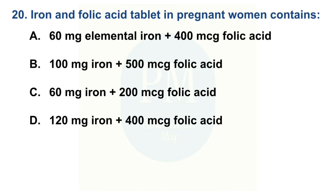Iron and Folic Acid Tablet in pregnant women contains: Option A: 60 mg elemental iron plus 400 mcg folic acid. Option B: 100 mg iron plus 500 mcg folic acid. Option C: 60 mg iron plus 200 mcg folic acid. Option D: 120 mg iron plus 400 mcg folic acid. The correct option is Option A: 60 mg elemental iron plus 400 mcg folic acid.